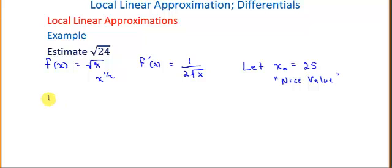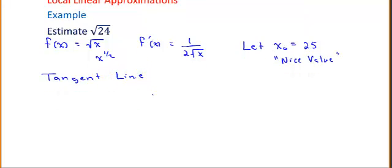So let's come up with the tangent line. And the tangent line, we'll give our x value, our x value is 25. Our f(x) value, which was square root of 25, which is equal to 5.